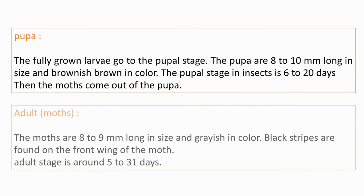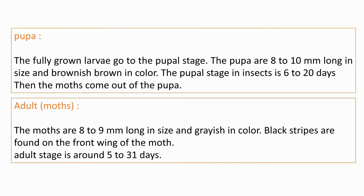The fully grown larvae go to the pupal stage. The pupa are 8 to 10mm long and brownish in color. The pupal stage lasts six to twenty days. The moths that emerge from the pupa are 8 to 9mm long and grayish in color, with black strips found on the front wing. The adult stage lasts around five to thirty-one days.